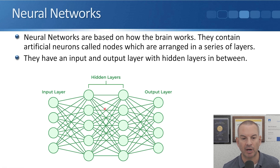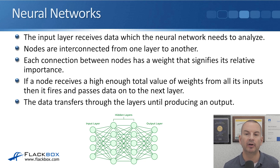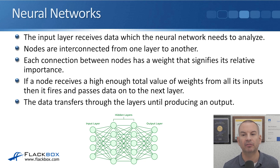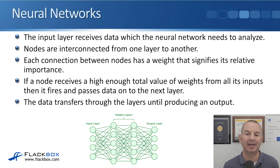All of our nodes are interconnected at each layer. The input layer receives data which the neural network needs to analyze and nodes are interconnected from one layer to another. Each connection between nodes has a weight that signifies its relative importance — it's the connections that have a weight, not the nodes themselves. If a node receives a high enough total value of weights from all its inputs then it fires and passes data onto the next layer, transferring through the layers until producing the final output.